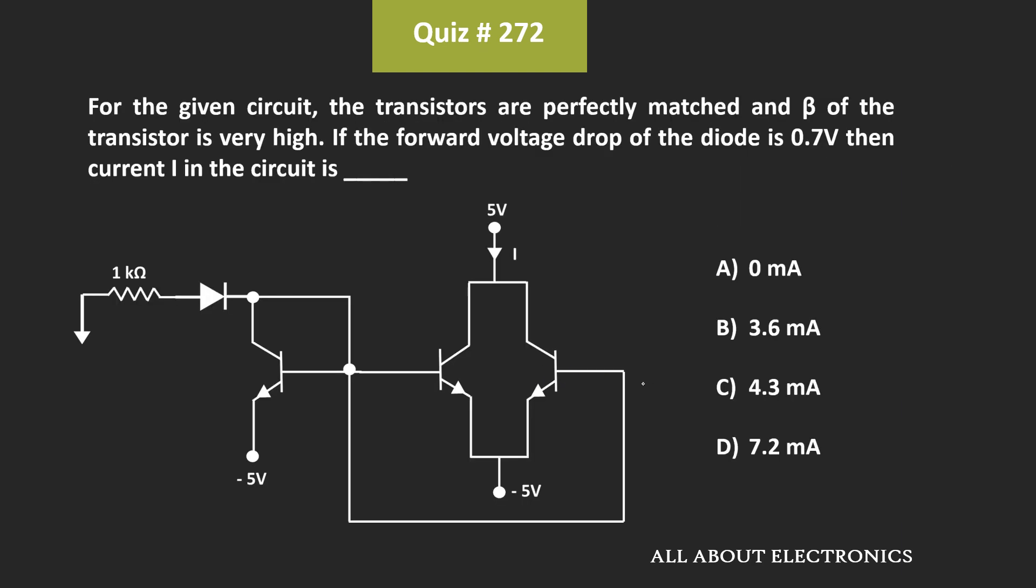So from this, we can say that for the given circuit, this collector current I is equal to 7.2mA. And hence, for the given question, D is the correct answer.